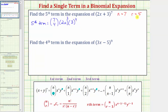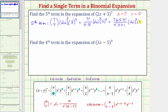Let's go ahead and simplify to find the fifth term. Seven choose four has a numerator of seven factorial and a denominator of four factorial times three factorial. Writing seven factorial as seven times six times five times four factorial, and expanding three factorial as three times two times one: four factorial divided by four factorial is one, and six divided by six simplifies to one, giving us thirty-five. Two x raised to the power of three equals eight x cubed, and three to the fourth equals eighty-one.